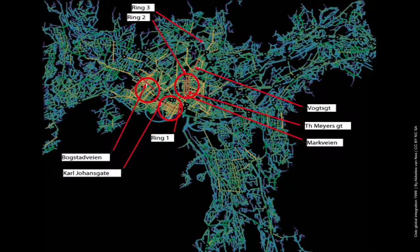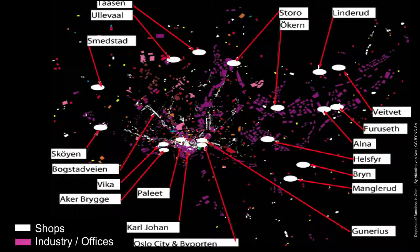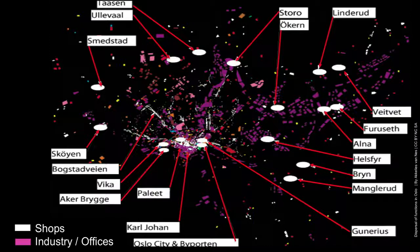You can also run a local integration analysis, and that highlights the various local centers in the city. Here you can see Oslo's three local centers popping up. You can also correlate the actual map with the dispersal of functions. You can see that the big car-based shopping malls follow global integration, while the pedestrian-based shopping areas follow local integration.